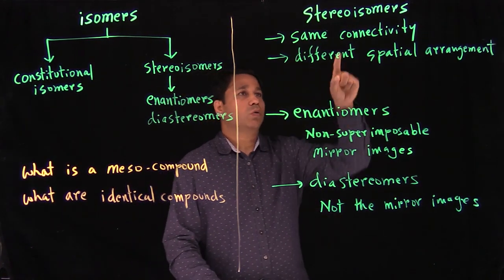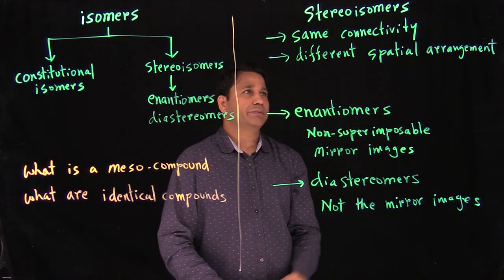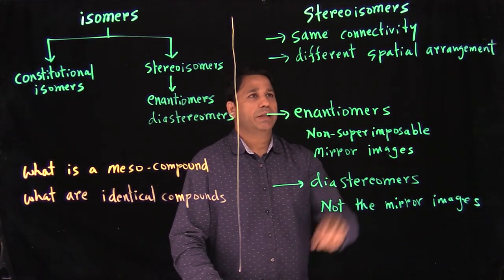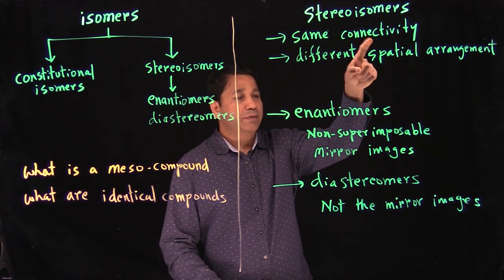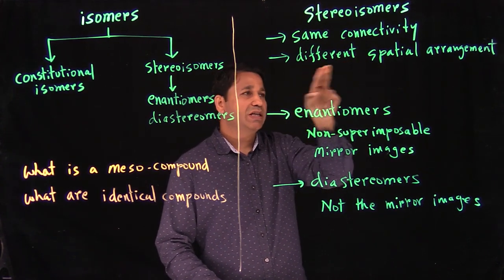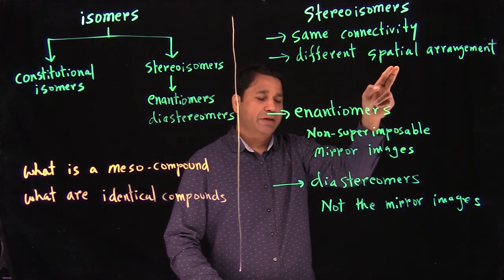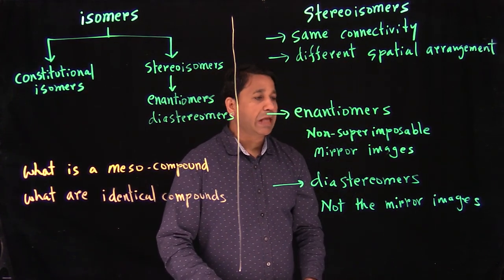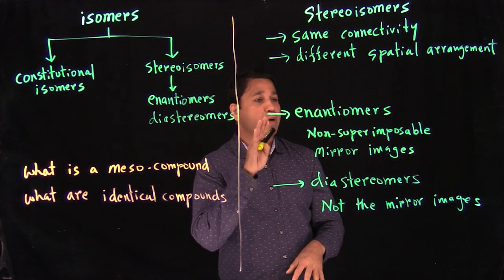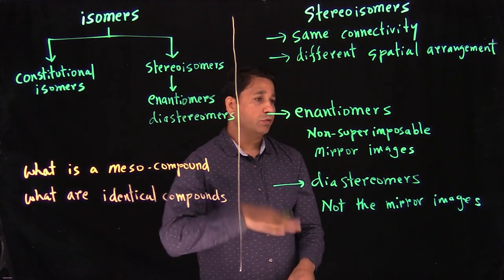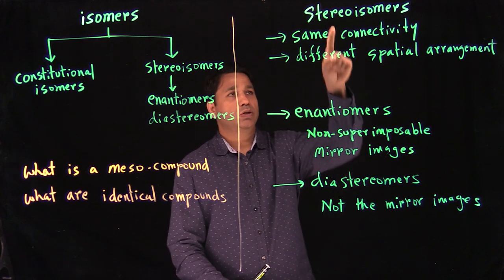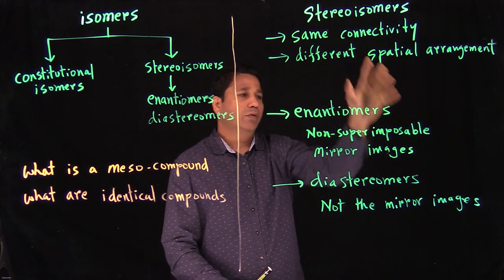Now let's find out what stereoisomers are. Stereoisomers have the same connectivity — meaning they are the same structure — but the only difference is the spatial arrangement. So they have the same connectivity, but a bond might be up or down.